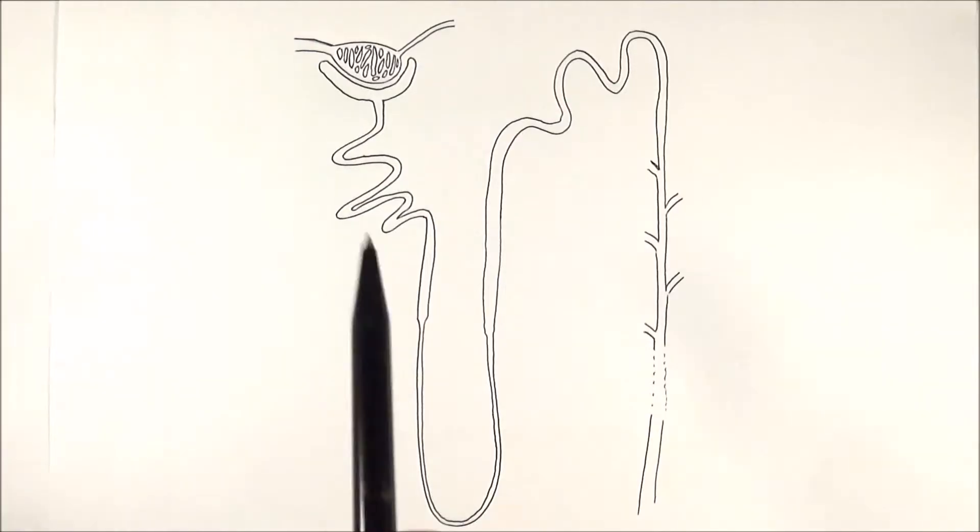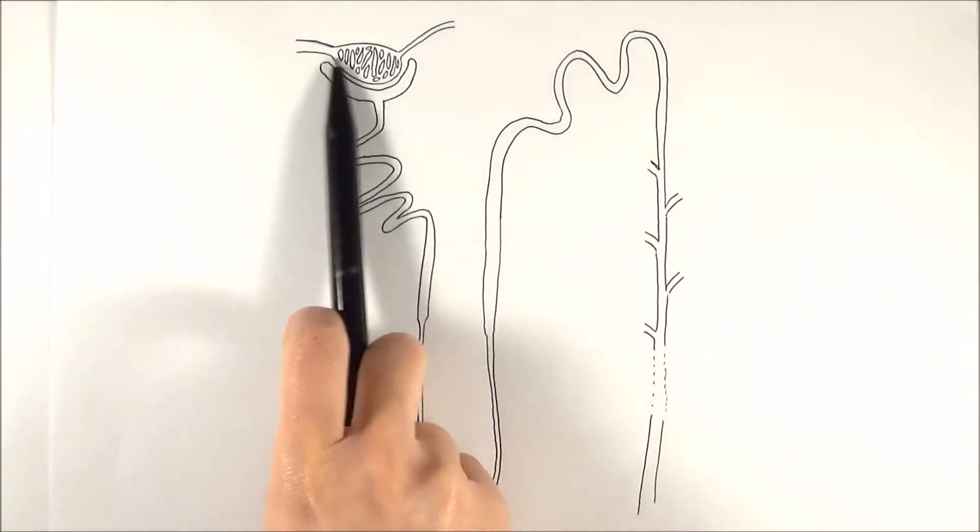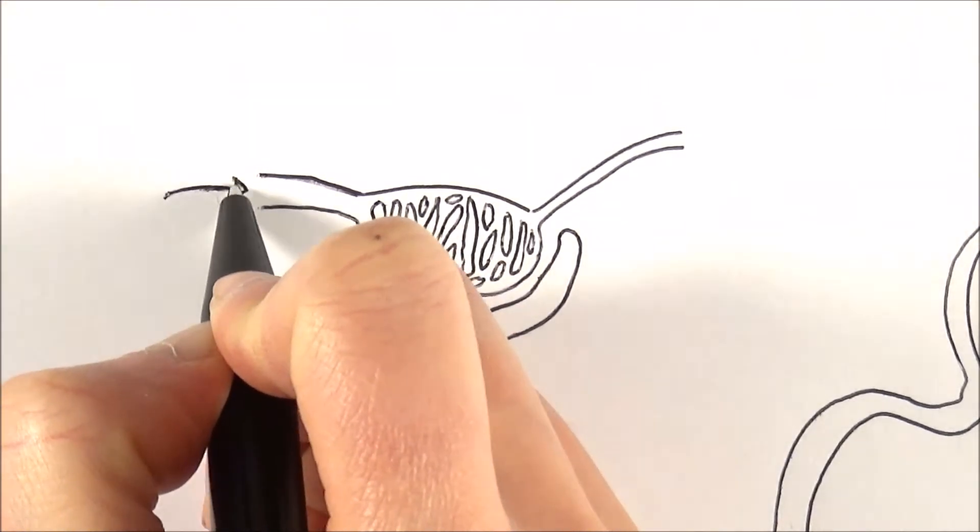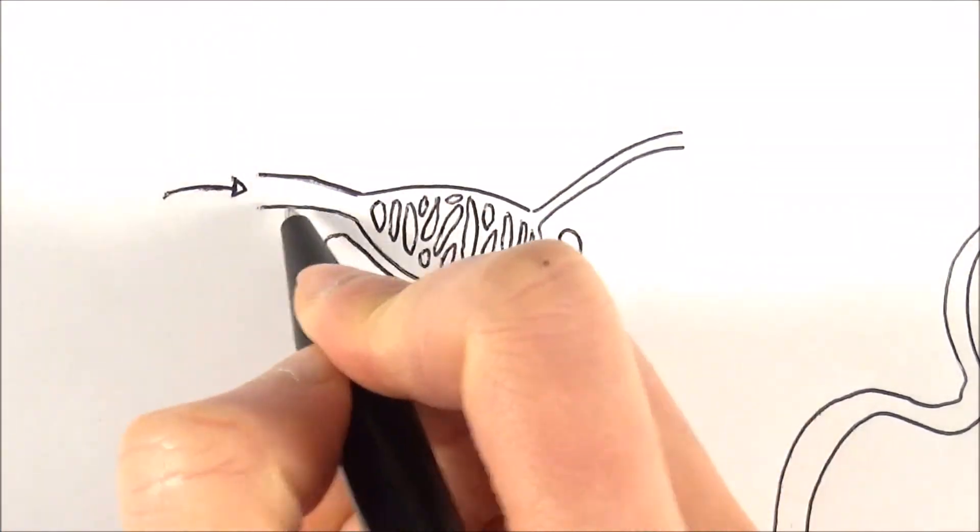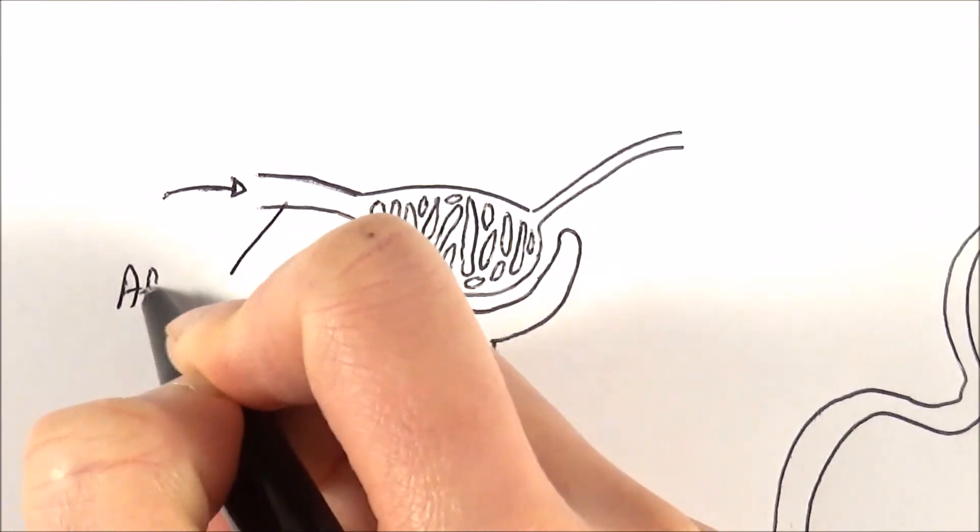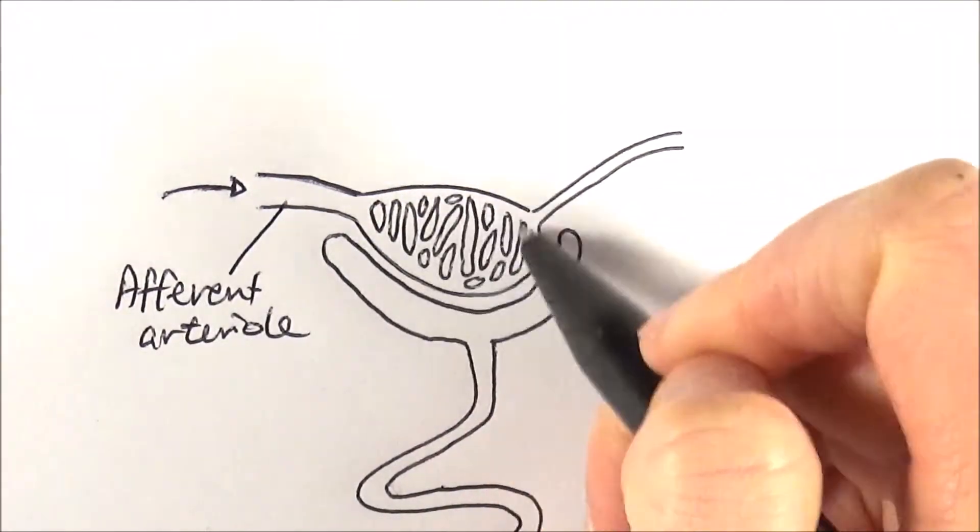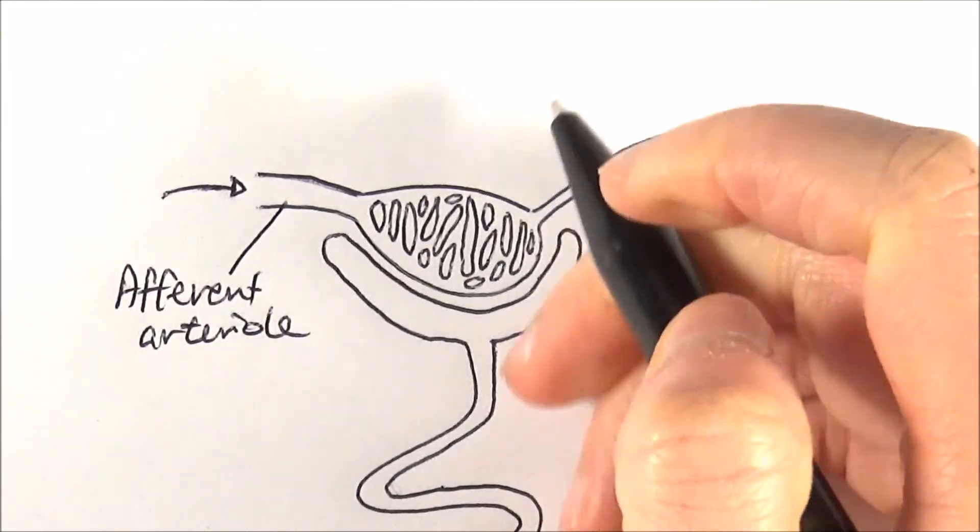The whole journey in this case starts in this beginning bit here. Now the blood enters from the renal artery from this side and then it enters this structure here which is called the afferent arteriole, and then the blood goes into the ball of capillaries here which is called the glomerulus.